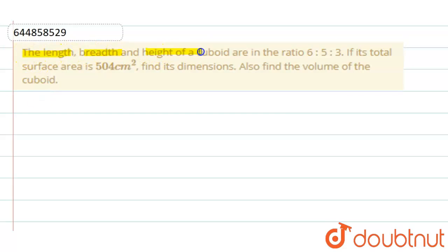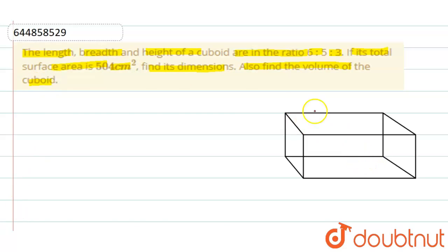breadth and height of a cuboid are in the ratio 6:5:3. If its total surface area is 504 cm², find its dimensions. Also find the volume of the cuboid. So here's a cuboid given